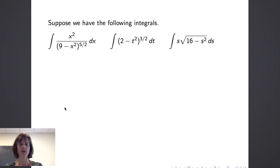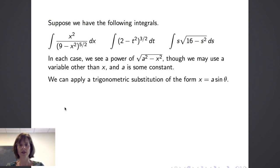Suppose we have the three following integrals: the integral of x squared over 9 minus x squared to the 5 halves power dx, the integral of 2 minus t squared raised to the 3 halves power dt, and the integral of s times the square root of 16 minus s squared ds. In each of these integrals, we see a power of the square root of a squared minus x squared, though we may use a variable other than x, and a is some constant.